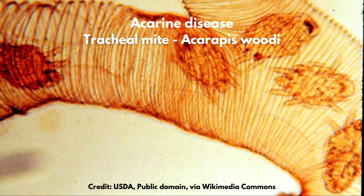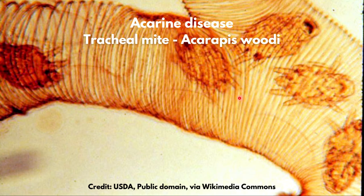The tracheal mite, or Acarine, is caused by the parasitic mite Acarapis woodi. It causes acarine disease in honeybees by infesting the breathing tubes or trachea of the adult bee, piercing the tracheal wall and feeding on the bee's haemolymph — bee blood. You need a microscope to see these mites inside the breathing tubes. To diagnose, send a sample of 30 adult bees to your bee diagnostic centre. The best long-term solution is to breed from colonies which show resistance to this disease.